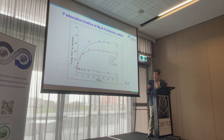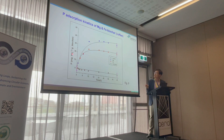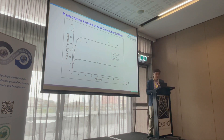For ground coffee waste biochar, magnesium also shows quite high phosphorus adsorption compared to other metals. In this case, iron, aluminum, and calcium were used for comparison. Aluminum shows better adsorption than calcium in the coffee waste biochar system.